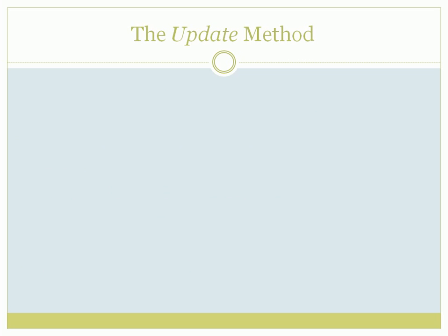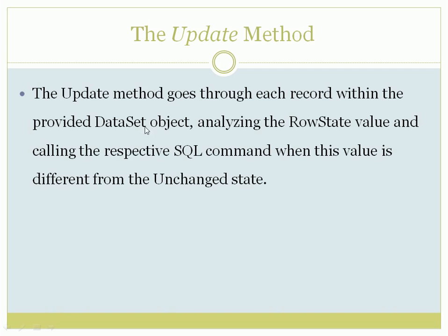The next important method is the Update method. The Update method goes to each and every record in your Data Set and analyzes the row state value of each row — whether a new row is inserted, whether an existing row is modified, or whether an existing row is deleted. According to the row state, it calls the respective SQL command: if a new row is inserted it calls Insert Command, if an existing row is deleted it calls Delete Command. If nothing is done, the row state is 'Unchanged'.